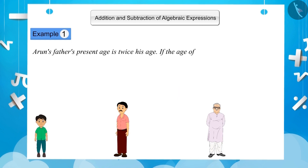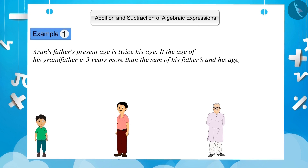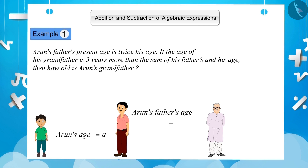If the age of Arun's grandfather is 3 years more than the sum of Arun's and his father's age, then how old is Arun's grandfather? Suppose Arun's age is 'a' years, so Arun's father's age is equal to 2 times a, which is 2a.